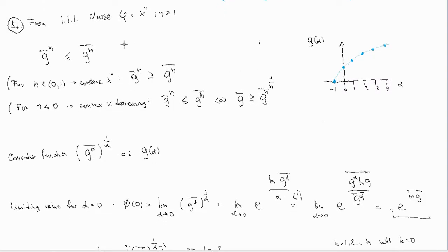There is another very interesting example: suppose you have the function x to the power n, which is convex, and you are trying to estimate what is the nth moment. The nth moment is defined as the average of the nth power of this variable g. If you take the result to the power of one over n, you will get that the average is always greater than g to the power of one over n. This is true for any n; however, when n is less than one, the inequality switches.